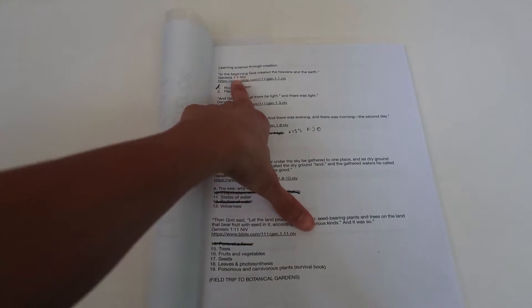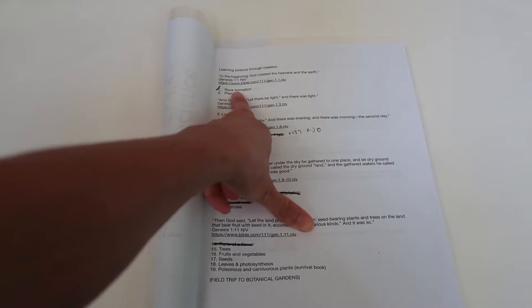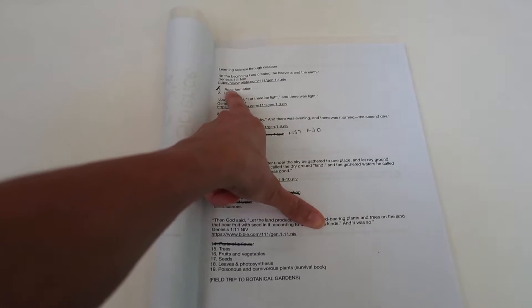So things we're going to be learning about, it goes like this. In the beginning God created the heavens and the earth. So for that Bible verse we're going to be learning about rock formation and planets. And then the next verse, so that's one week is rock formation, the second week is planets.